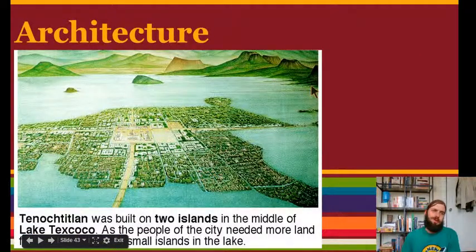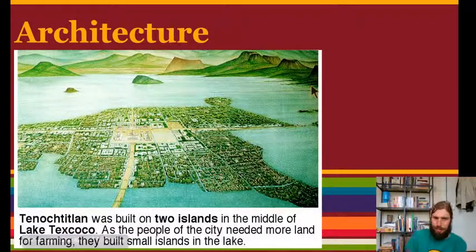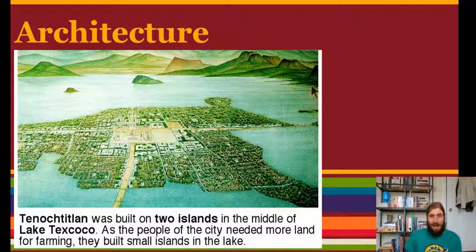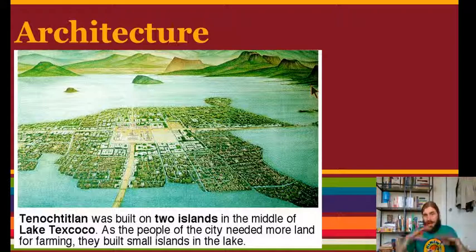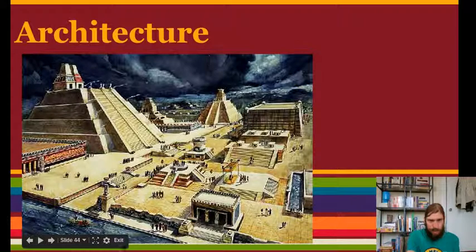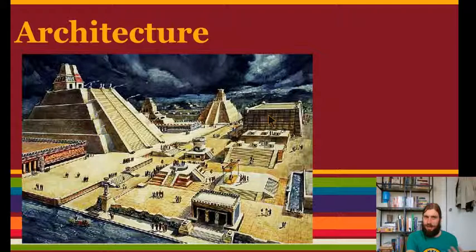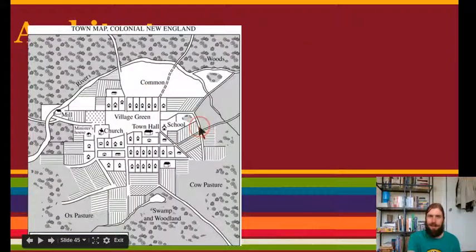Now let's talk about their architecture — their building style. The Aztec capital is called Tenochtitlan. It's very interesting because it's built on an island in the middle of a lake. The Aztecs were very good architects and builders — they were actually able to expand and build more islands to grow their city. This is a picture of the temple district in the middle of town where all the temples were located. Just like the Mayans, they built temples.